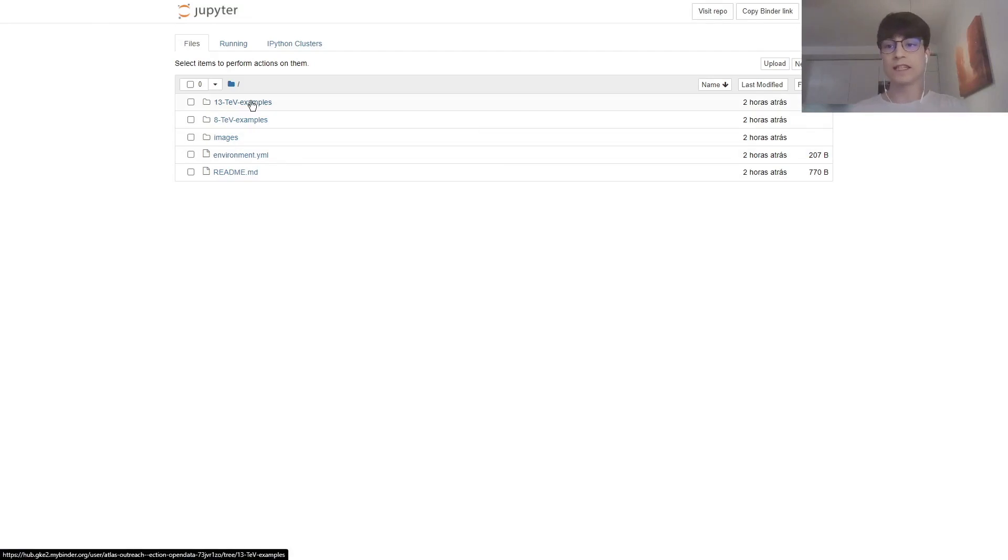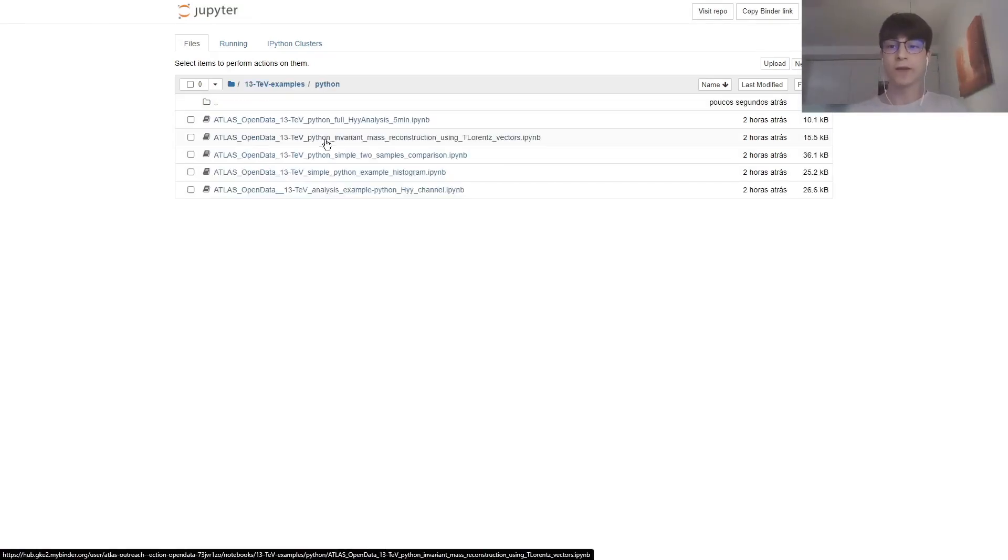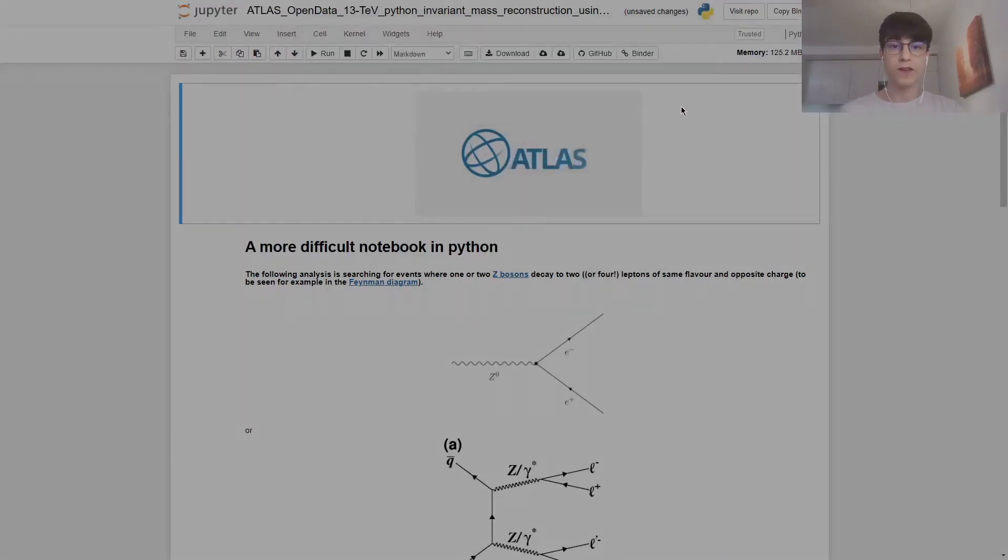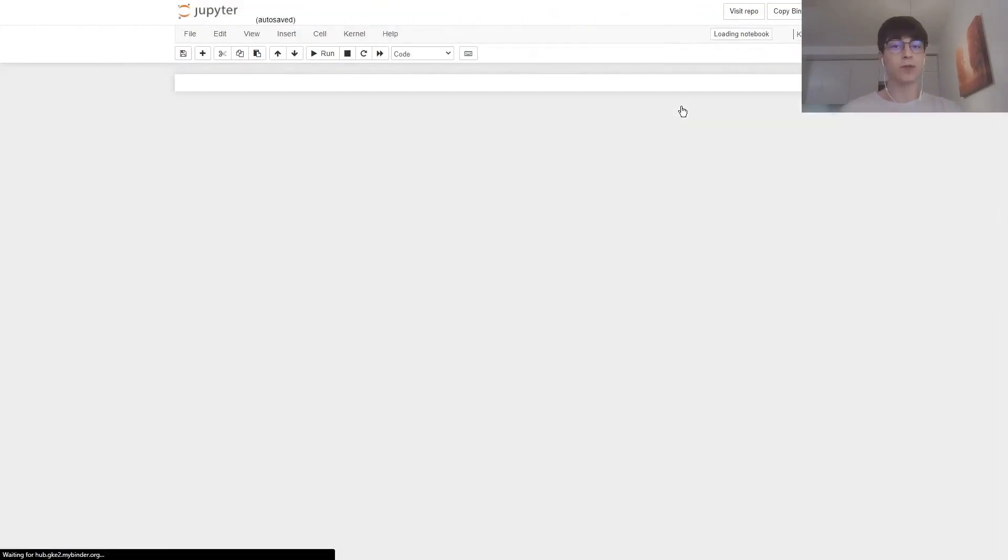We're now going to click on 13 TeV examples, and then on Python, and click on the second histogram, invariant mass reconstruction using TLorentz vectors. Once the notebook loads, we're going to click on 'not trusted', then 'trust', to allow for all the plots to properly load.